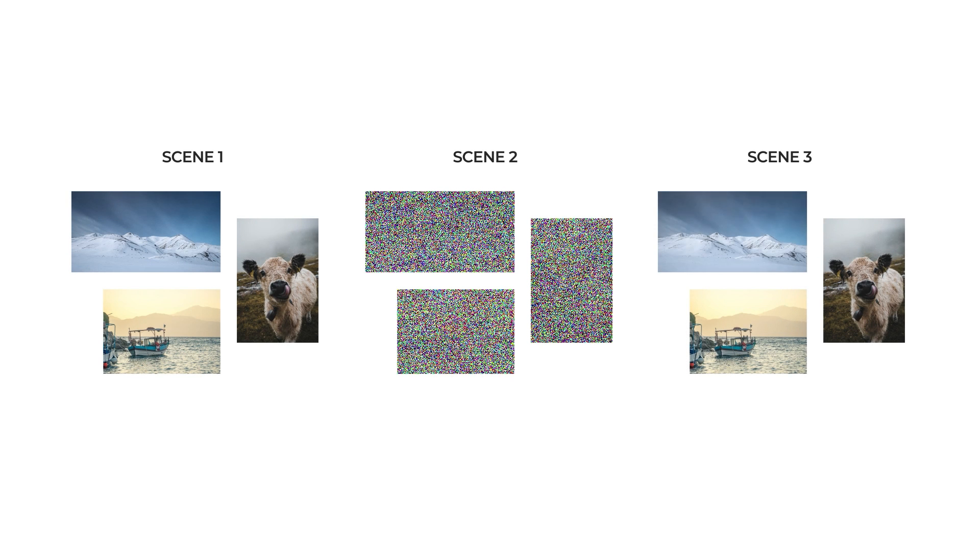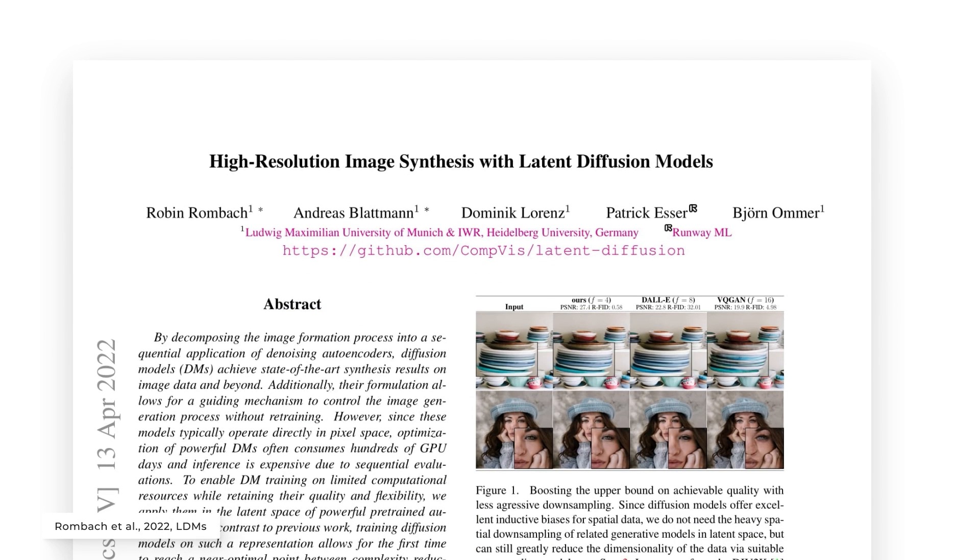Basic diffusion models take random noise with the size of the image and learn to apply further noise until we get back to a real image. The model has access to real images during training and learns the right parameters by applying noise iteratively until the image reaches complete noise and is unrecognizable. When the noise generated from all images is similar and follows a similar distribution, we use the model in reverse, feeding it similar noise to generate an image like those used during training.